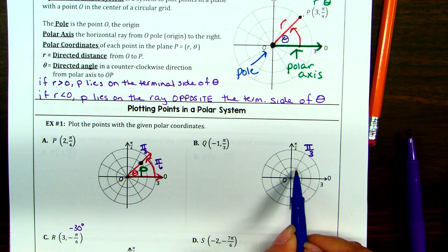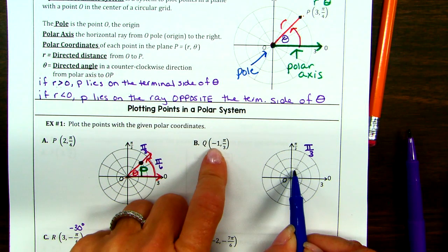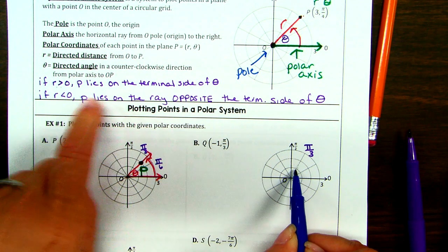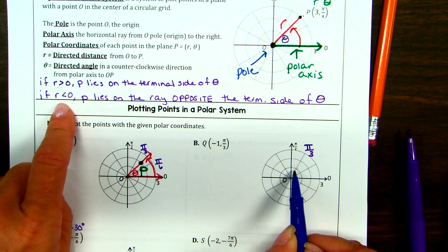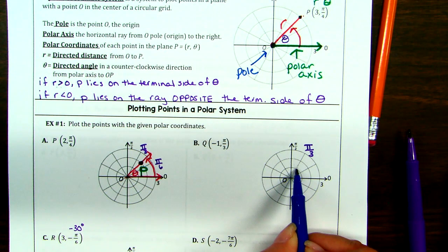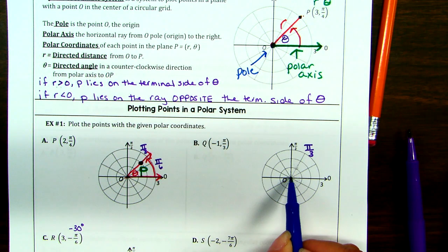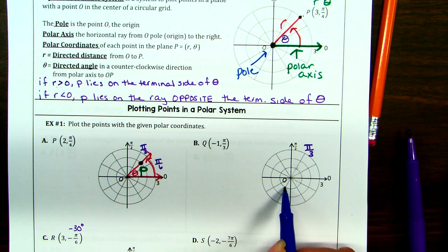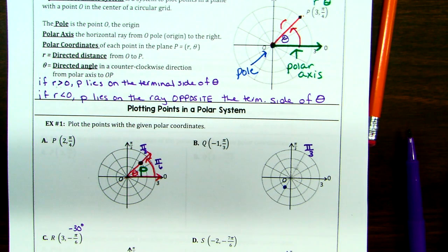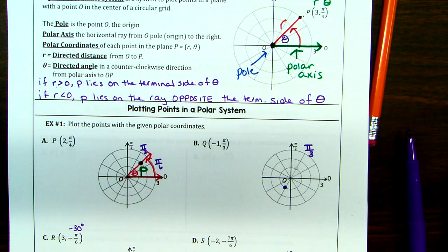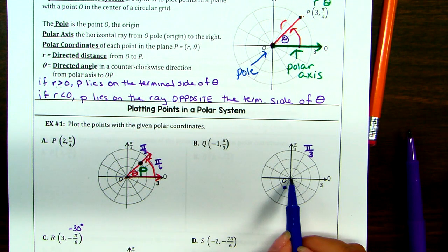Do I get to stay here? No. I've got a negative going on here — I have to make a move. This is where r is less than zero. The ray opposite is right exactly through the origin. Whenever you have a negative radius, you'll hear me say: just shoot right through the origin. We're on the opposite side.